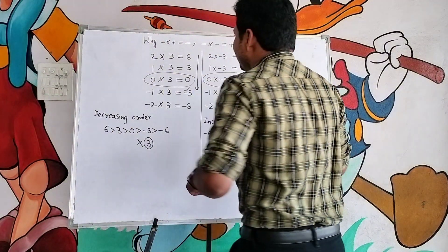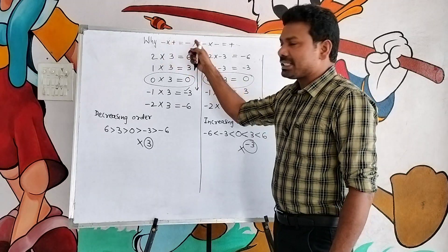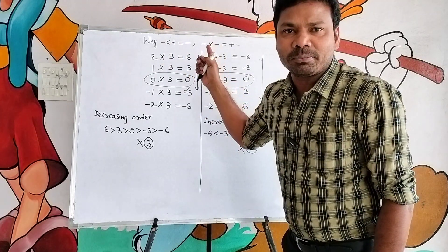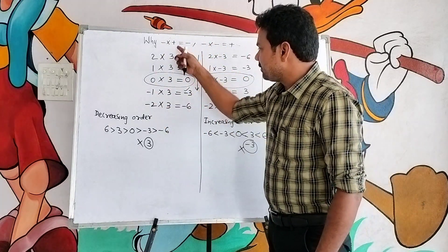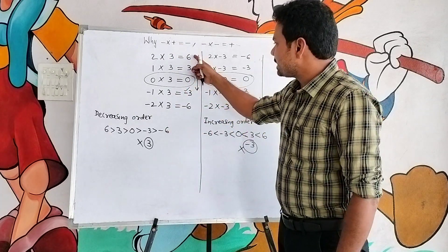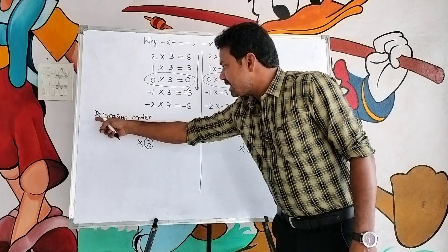Good afternoon, today's topic is minus into plus equals minus, and minus into minus equals plus. If you multiply these numbers with three, the results are six, three, zero, and it is in decreasing order.